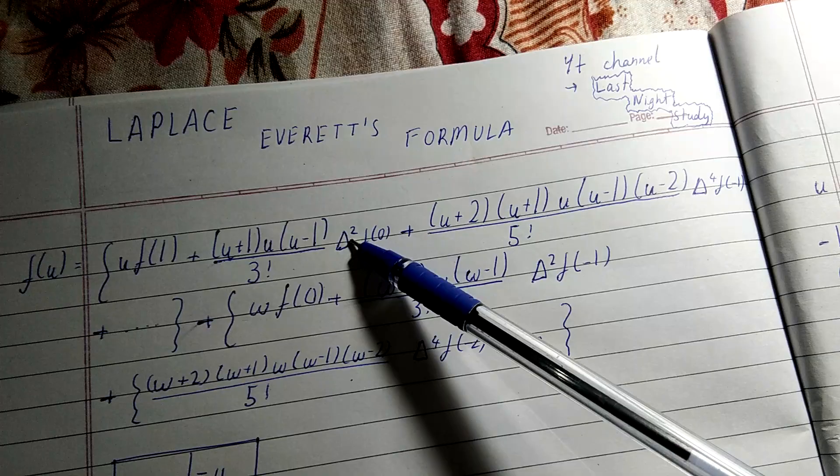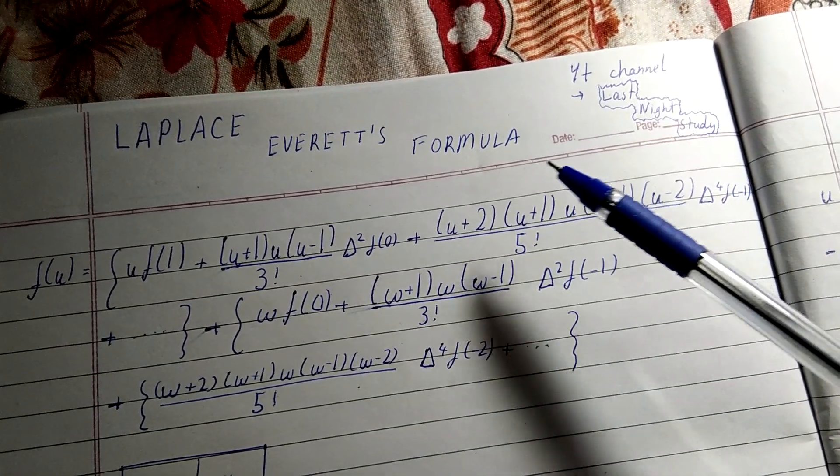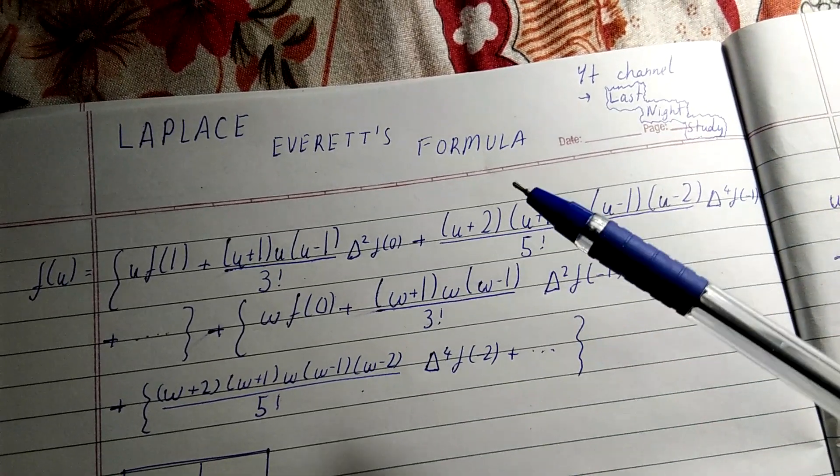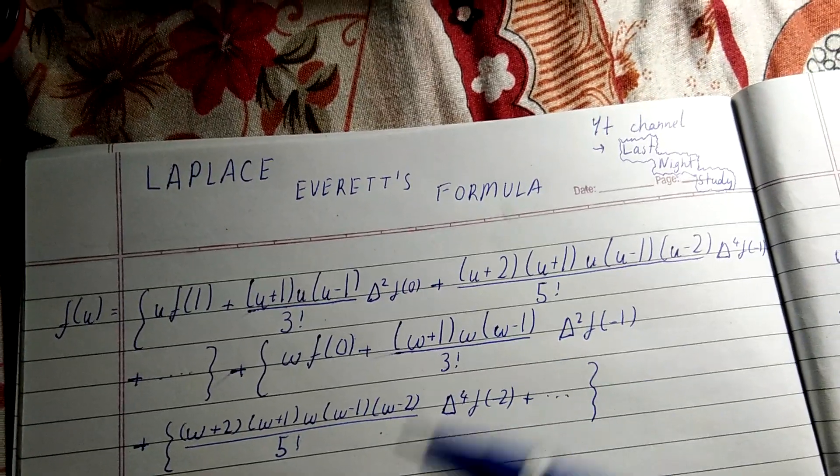This is the first thing you should keep in mind. And the second thing is: first we are taking u, then we are taking both u+1 and u-1, and in the next part we are taking u+2 and u-2.